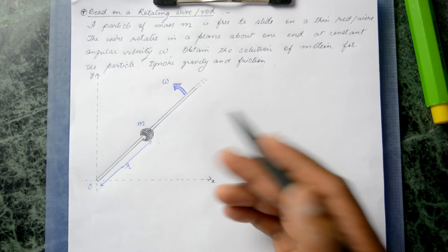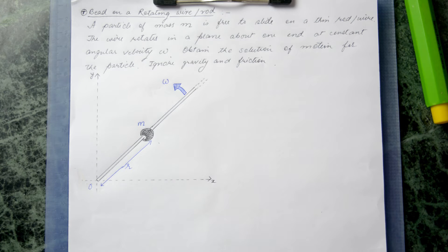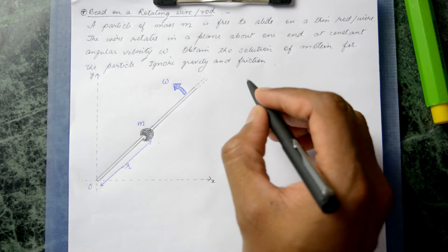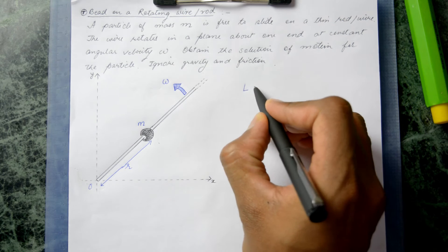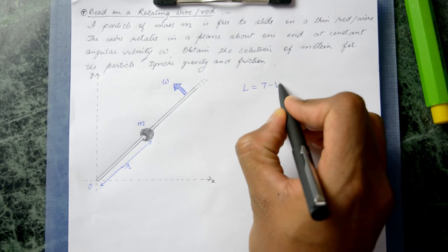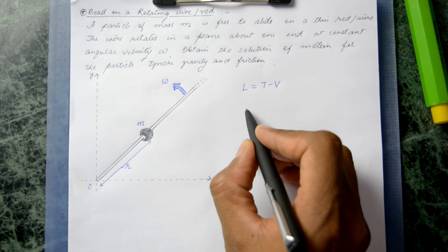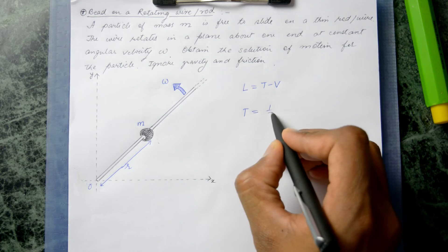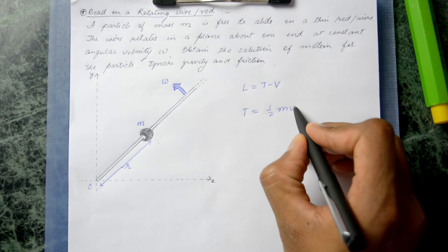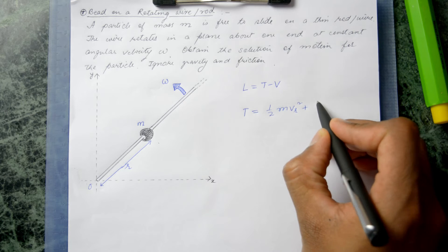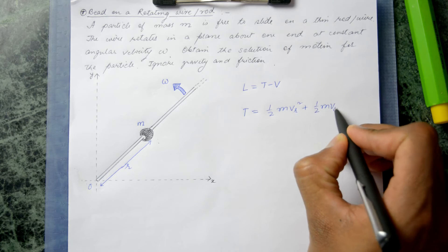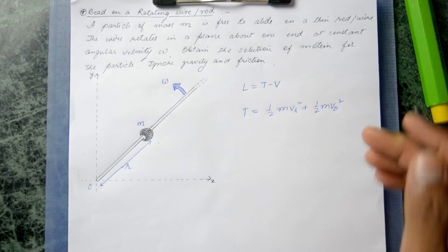To apply the Lagrange equations, we first need to find the Lagrangian. The Lagrangian is L = T - V, where T is the kinetic energy and V is the potential energy. The kinetic energy can be written as one-half m·V_R² plus one-half m·V_θ².